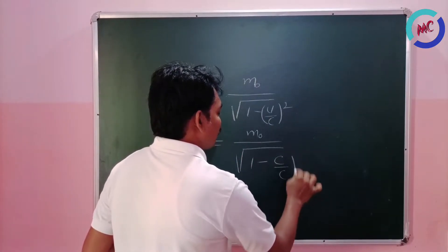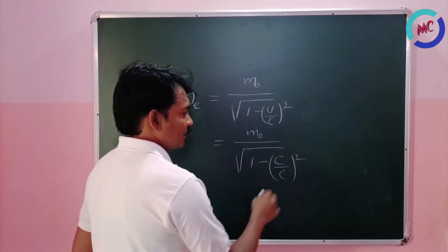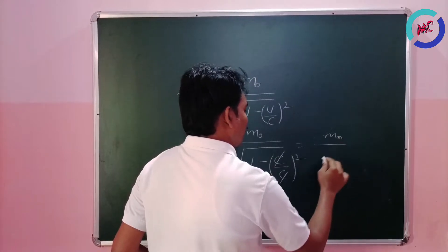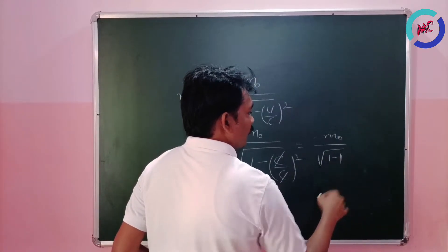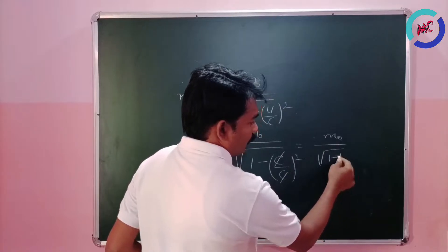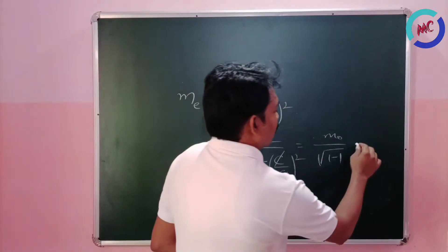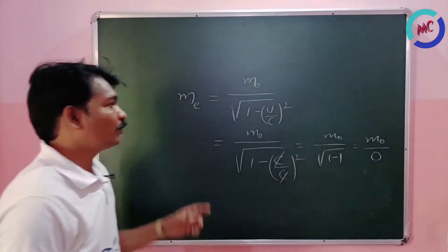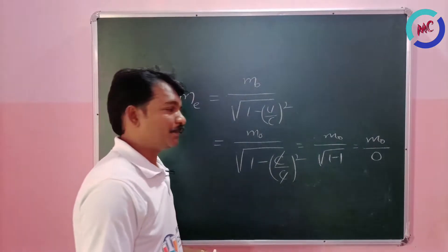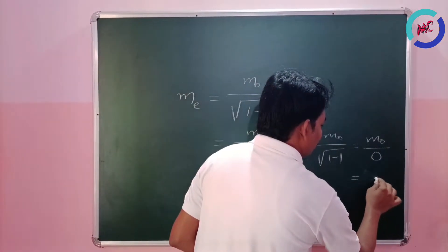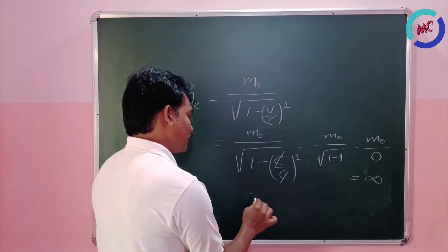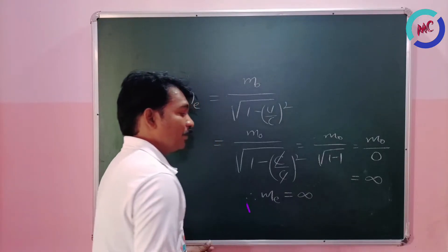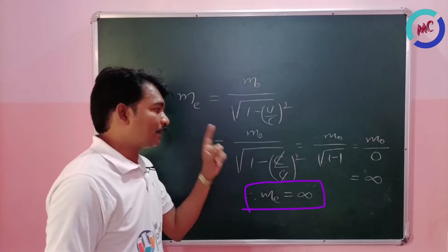If v equals c, then m_e equals m₀ divided by the square root of (1 minus c/c)², which gives m₀ divided by the square root of (1 minus 1), which is m₀ divided by zero. That means the mass of the moving electron is equal to infinity. Therefore, m_e equals infinity when the velocity of the moving electron equals the velocity of light in vacuum.